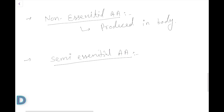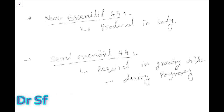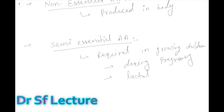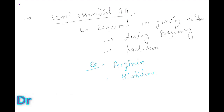The third kind is semi-essential amino acids. These may or may not need to be taken with the diet. They are required in growing children, during pregnancy, or during lactation. Examples of semi-essential amino acids are arginine and histidine.